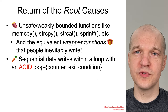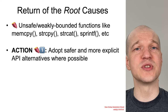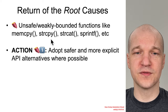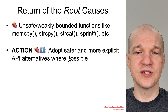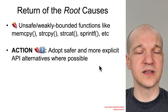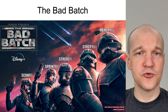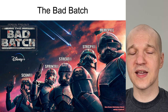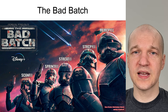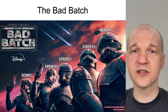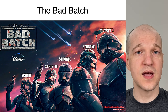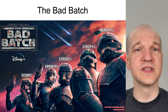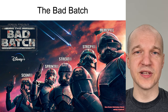Now let's return to some of the root causes of these vulnerabilities and examine the sweet potato. One of the things you can do to reduce buffer overflows caused by weakly bounded functions is to adopt safer and more explicit API alternatives where possible. If we examine the bad batch — the most common hitters, things like memcpy, strcpy, strcat, etc. — there are oftentimes safer alternatives available. They're not completely safe, just safer, because they're more explicit about what the programmer's intent is meant to be, and consequently it's easier to examine them to determine whether an attacker could manipulate that intent.